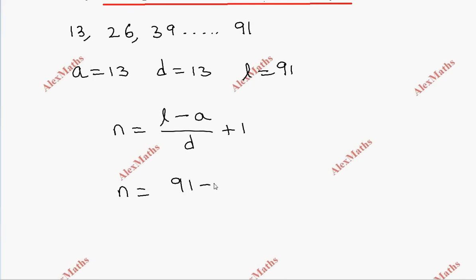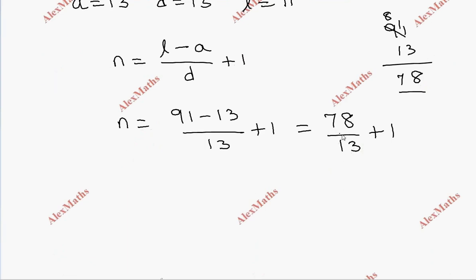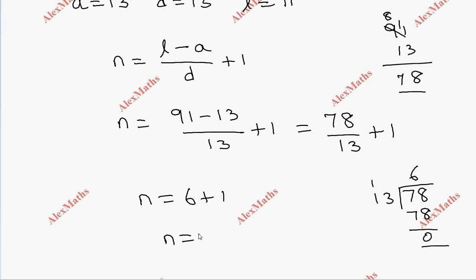Substituting: n = (91 - 13) / 13 + 1. So 91 minus 13 is 78, giving us 78 divided by 13, plus 1. 78 divided by 13 equals 6, with remainder 0. So n = 6 + 1, which means n is equal to 7.